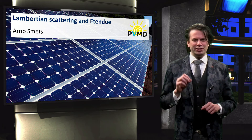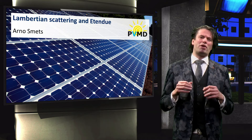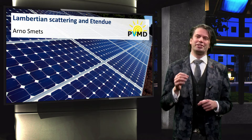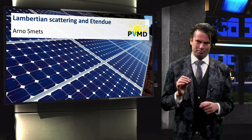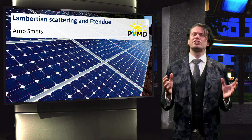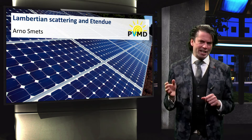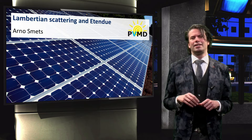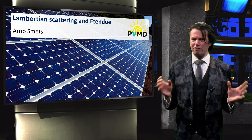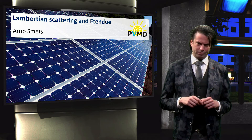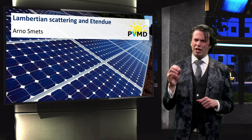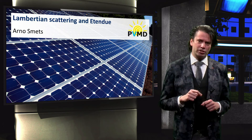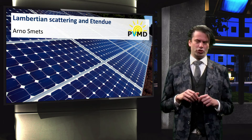In photovoltaics, it is not the total amount of energy that is important, but the amount of energy per unit time. The position of the sun in the sky changes during the day and with the seasons, and light incident on our solar panel varies as well. How can we relate the position of the sun to the power incident on the solar panels?